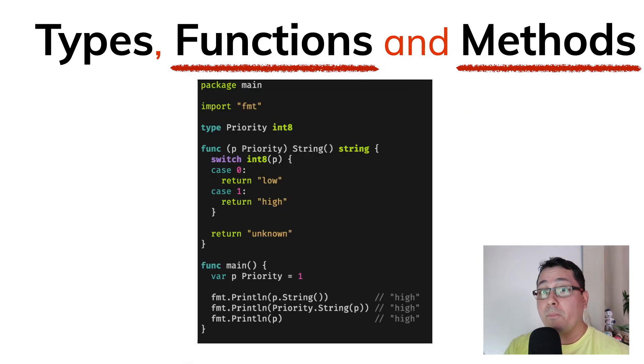There is this type called priority, which happens to be using an int8. That means that everything that is going to be stored for this priority will be using int8 as the capacity of the values that it's going to be supporting.